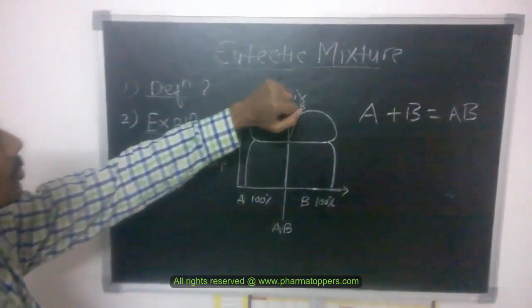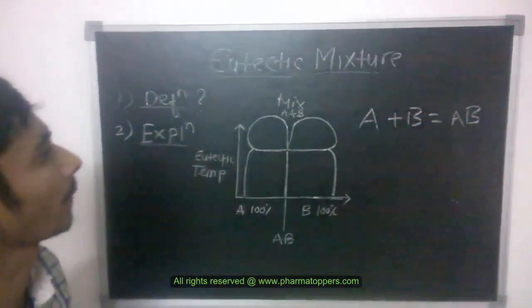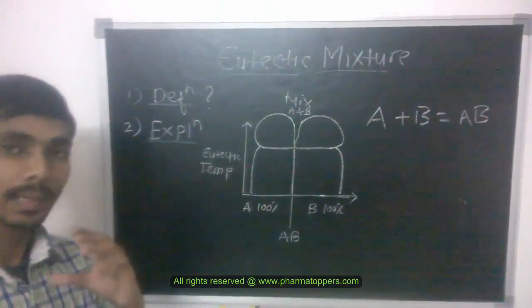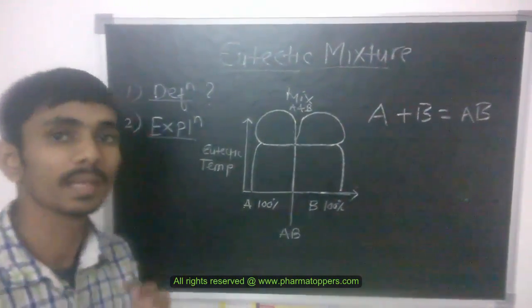Now we are going to see what is a eutectic mixture. A eutectic mixture means a mixture of components that have a melting point lower than the individual components.